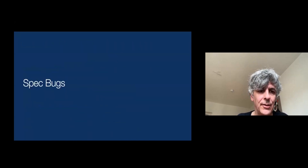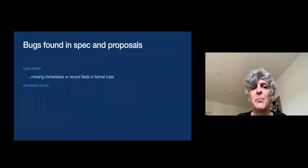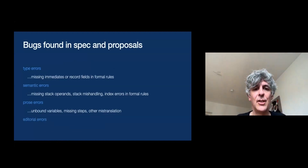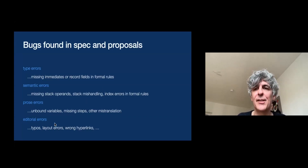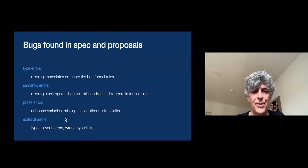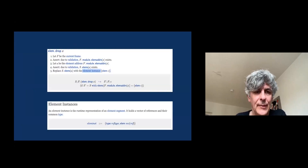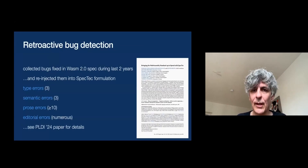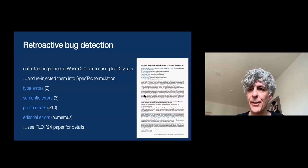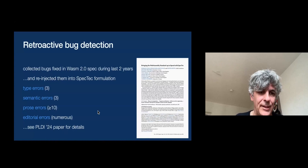There are some limitations I won't go into here. We found various bugs in the specification by doing this process. We injected old bugs that were already found into our tool to figure out whether it would discover them, and it did in most cases. There are classes of bugs that are now completely prevented by construction — for example, certain editorial errors like typos and wrong hyperlinks just won't happen. For more detail, we recently had a paper accepted to PLDI which Dongzhun is going to present in two weeks in Copenhagen.